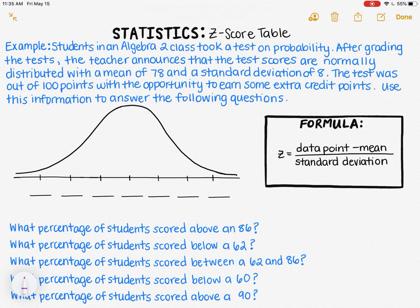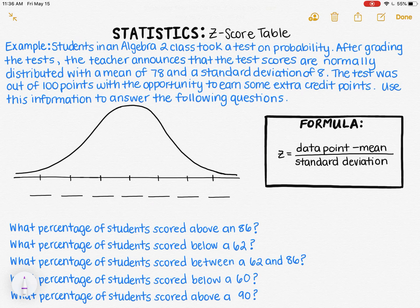Since we know that the data is normally distributed, I've already drawn the bell-shaped curve that represents any normal distribution. Whenever you find out that data is normally distributed, you should feel comfortable drawing this bell-shaped symmetric unimodal curve to represent the data. Let's label the normal curve with the information we've been given. The mean is 78, and in a normal distribution the mean is exactly in the center, so I'll label the center tick mark 78. The standard deviation is 8, and the space between each tick mark represents one standard deviation.